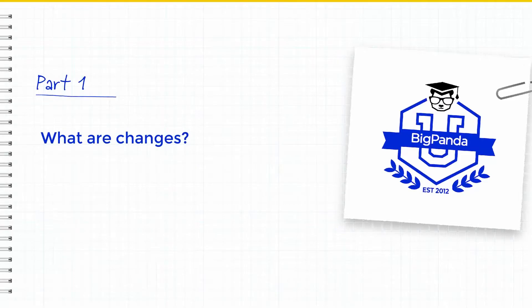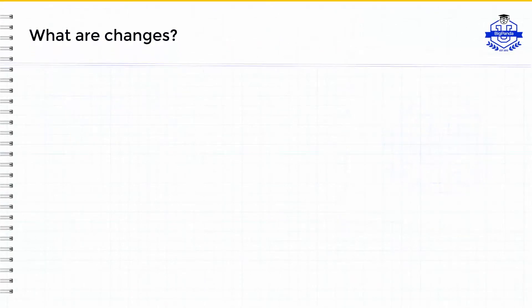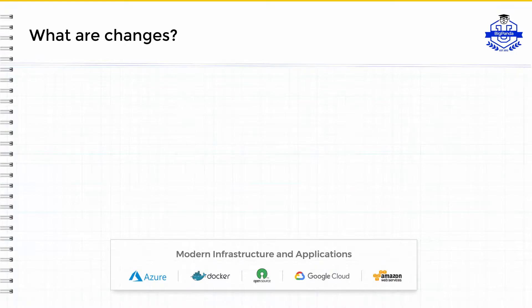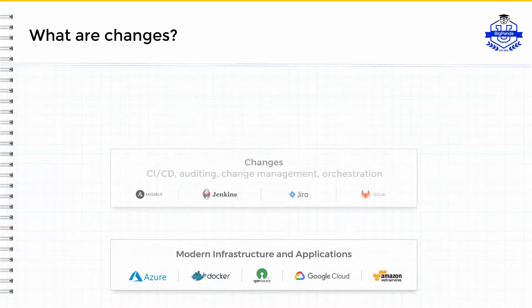Let's start by discussing what are changes. Modern infrastructure and apps generate a lot of noise, and by definition and design, they're also changing constantly. A deployment of a new version of a microservice, a new network configuration, or a new permission policy to a database — all of these and more are changes, and they cause over 85% of today's IT incidents and outages.